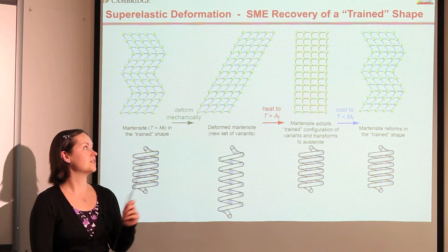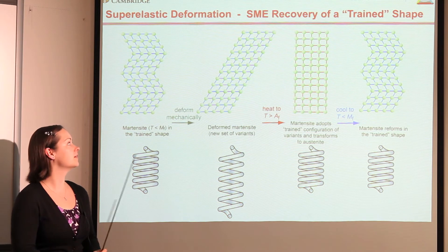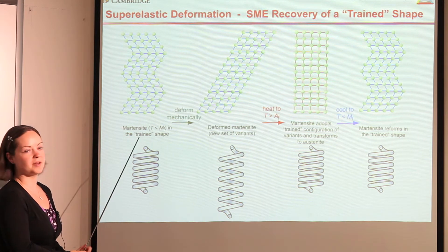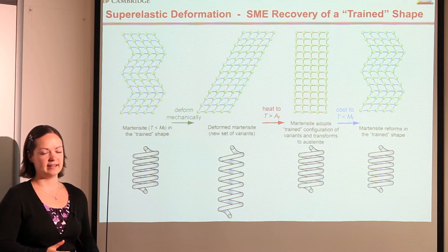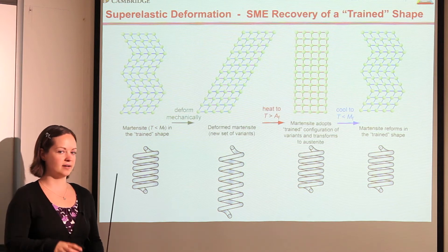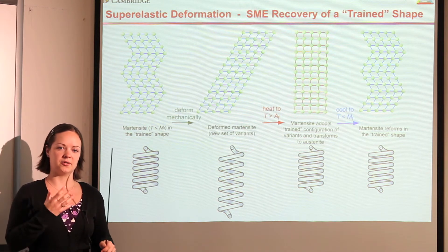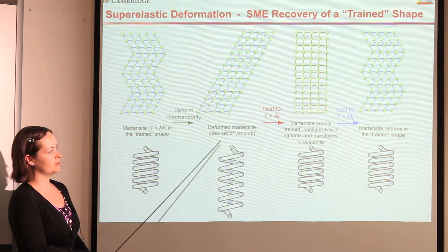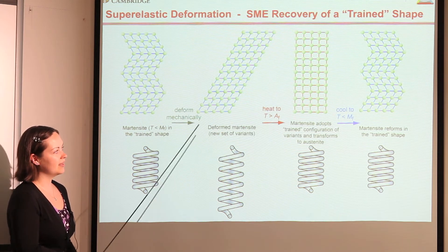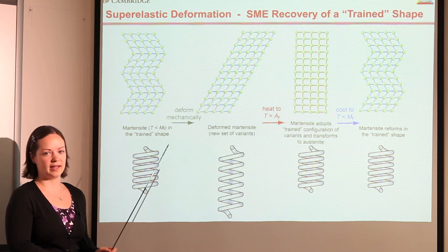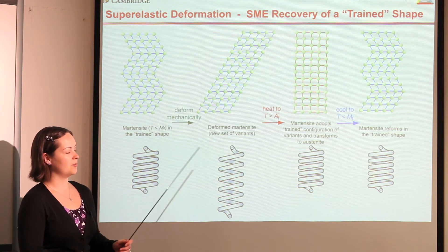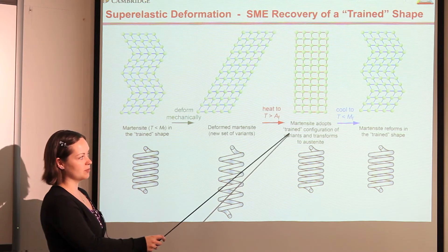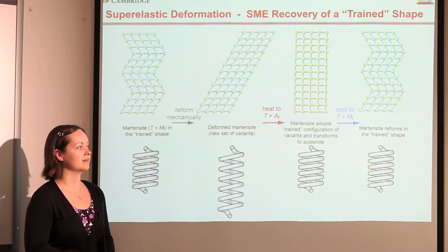This slide shows schematically what happened during the experiment. We started off with the alloy in the martensite phase at room temperature, we deformed it mechanically, and it still stayed as martensite, but what happened is the material adopted a new set of variants — deformed martensite with a new set of variants. We then heated it up and it changed back to austenite, and the shape that the material adopted is something that's called its trained shape.